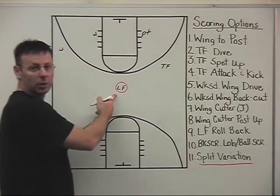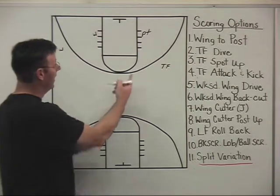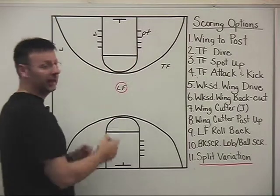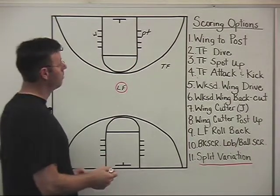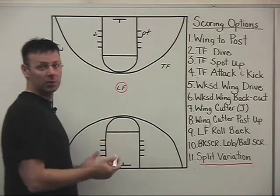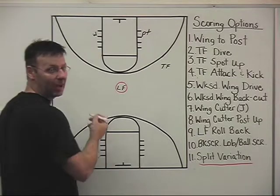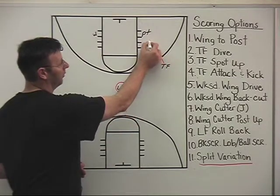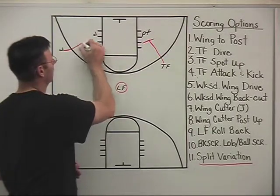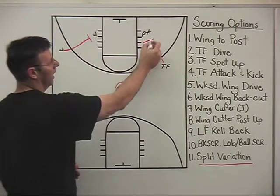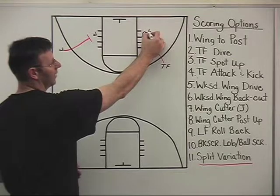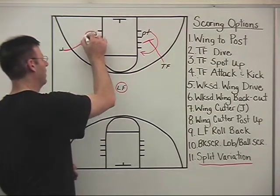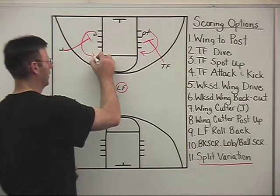Our lead forward is now at the top of the circle and has had a chance to evaluate the split cutters. No opportunity to get a pass to them for a basket. Now we're right into a simple motion concept of down screening — we just down screen for our split cutters. And we like off the down screen to have those guys curl.